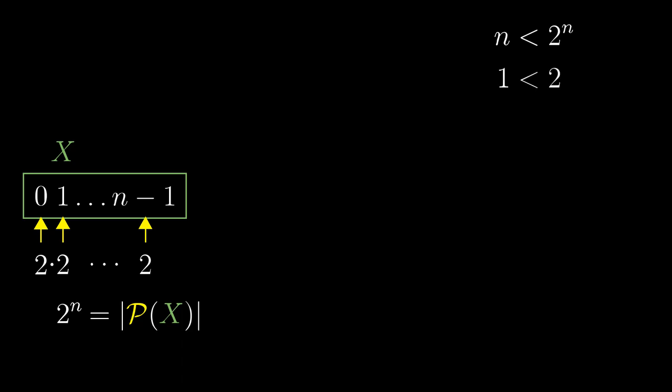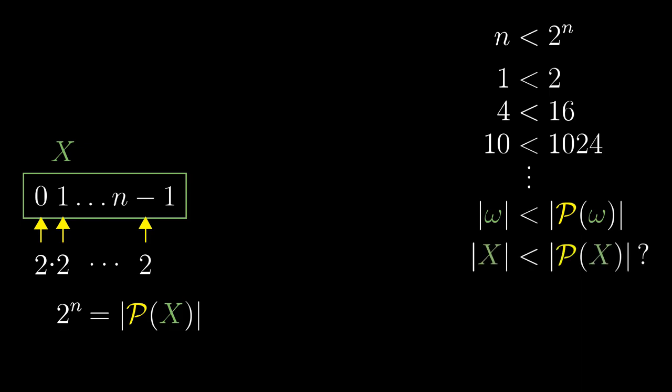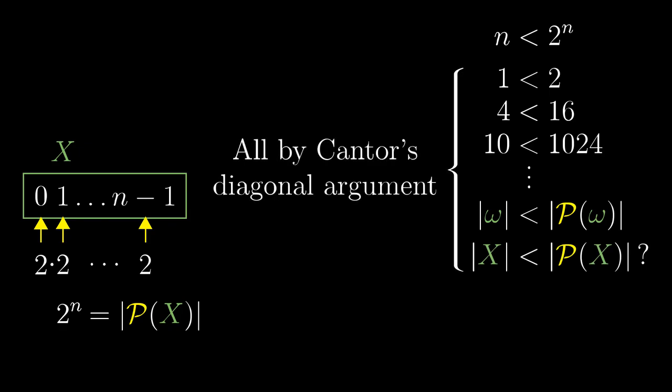1 is less than 2, 4 is less than 16, 10 is less than 1024. From the last video, we also know that the power set overcomes even the countability. The power set of omega is larger than omega. Does that hold in general? Is the power set of an arbitrarily large set larger than the original set? In fact, Cantor's diagonal argument was general enough to cover all possible sets.